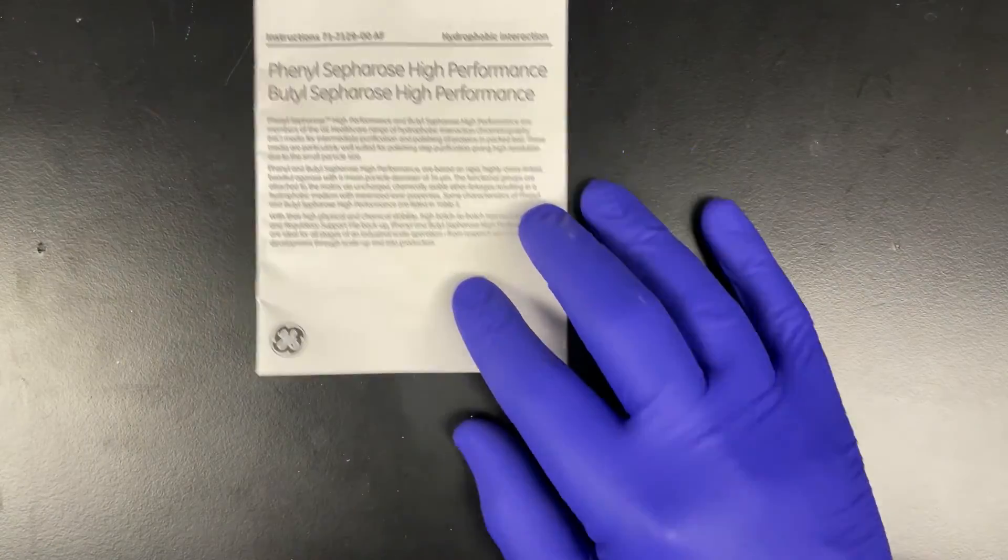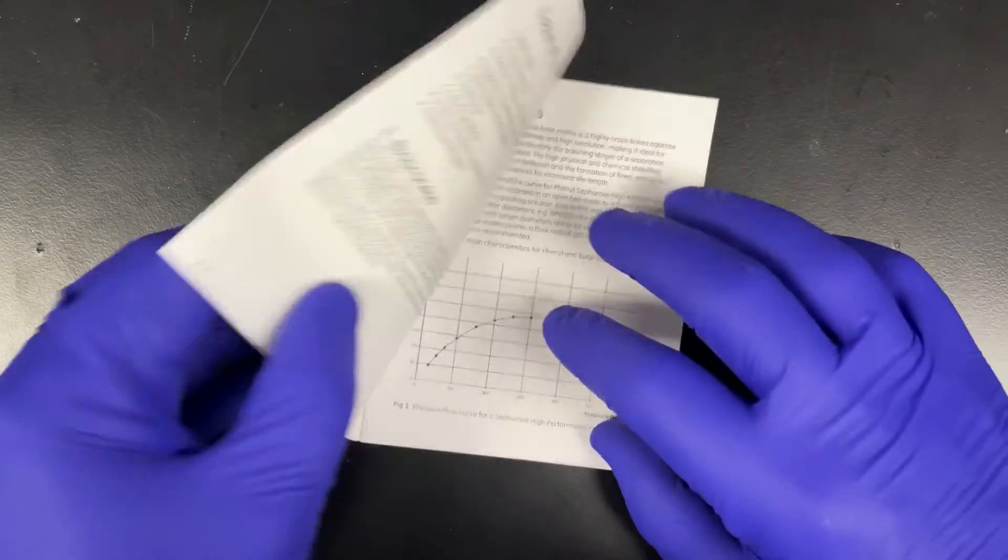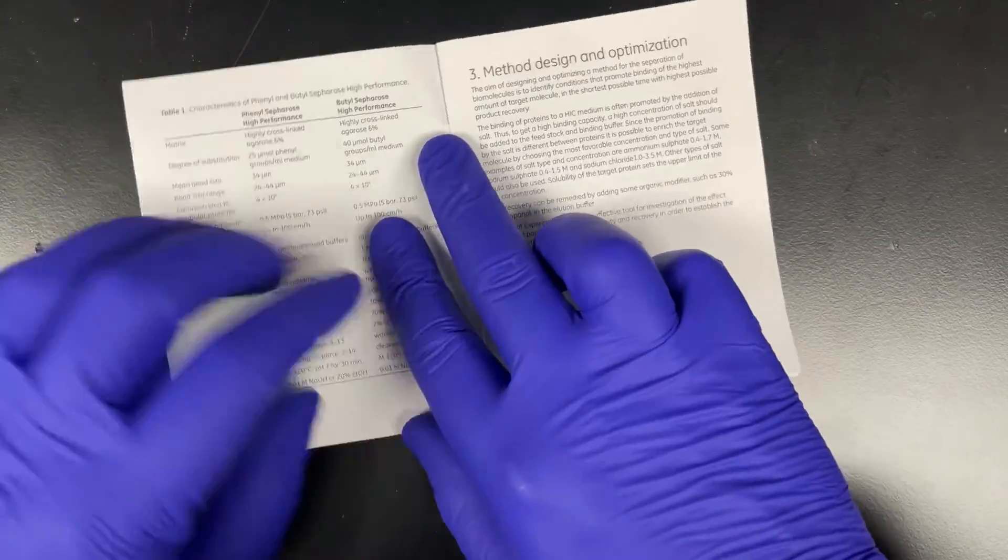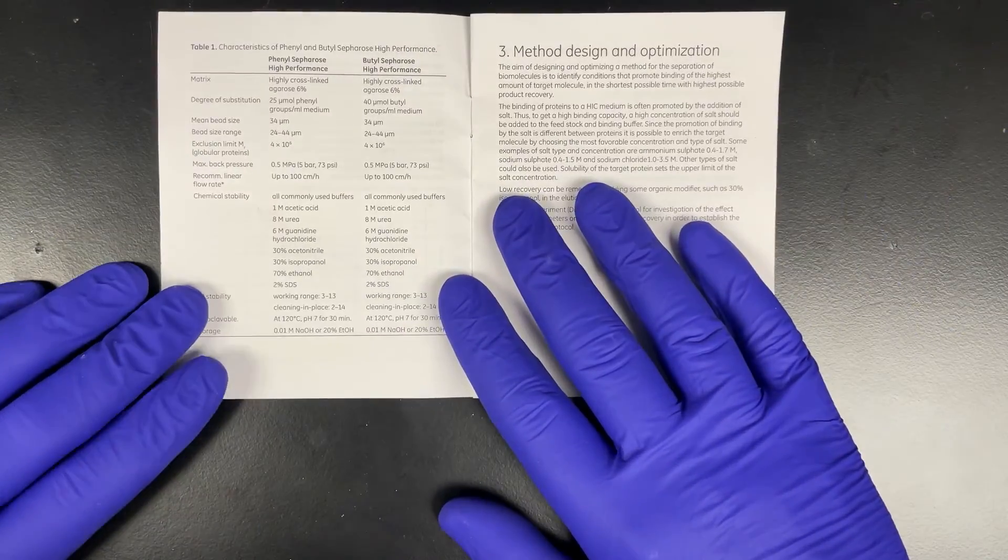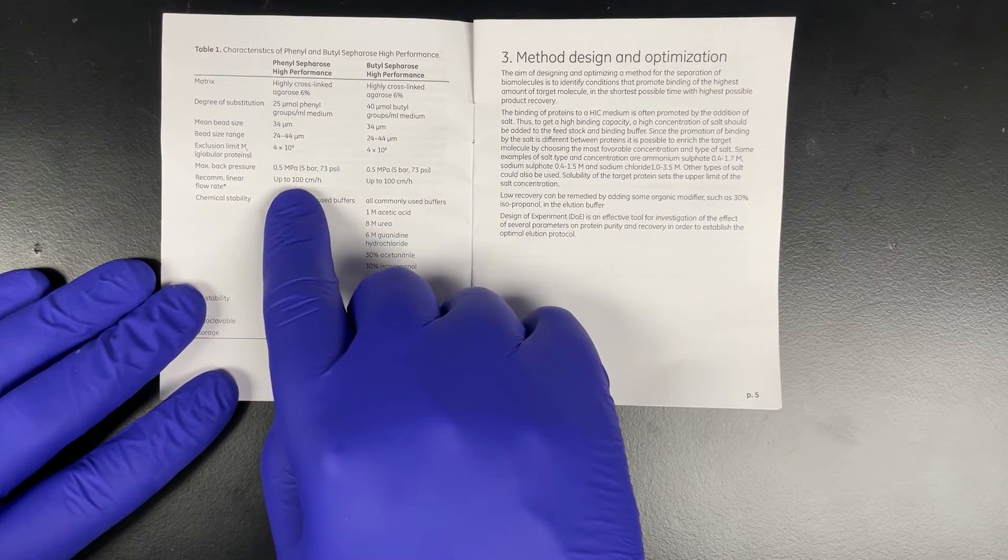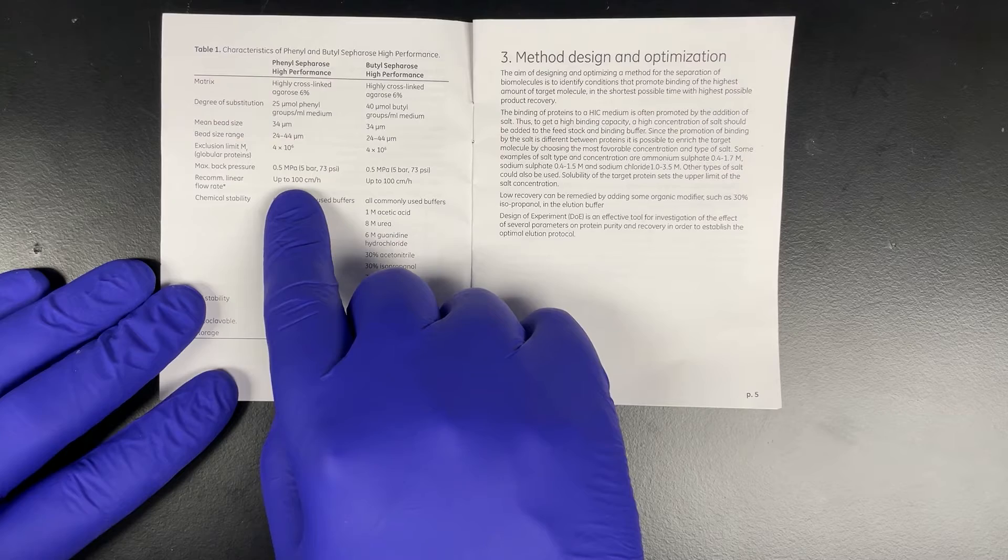One of the things we haven't done so far is to figure out what flow rate we're going to run the new column at. We'll look in the instruction booklet and we will find a recommended flow rate that's a linear flow rate, which is in centimeters per hour. For the new column, we're going to have to calculate what the flow rate is in mils per minute.